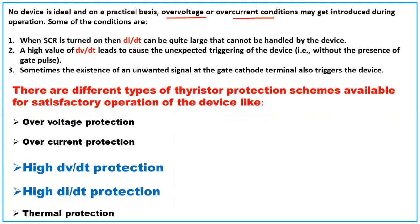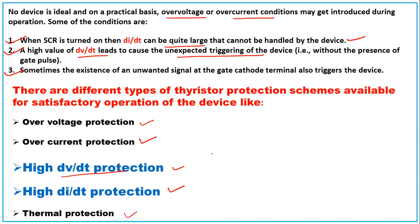Some of the conditions are: when the SCR is turned on, di/dt — the rate of change of anode current — can be quite large and cannot be handled by the device. A high value of dv/dt can also lead to unexpected triggering. There are different types of thyristor protection schemes: overvoltage protection, overcurrent protection, high dv/dt protection, high di/dt protection, and thermal protection. dv/dt and di/dt protection are the most important.